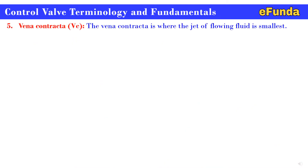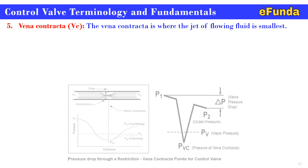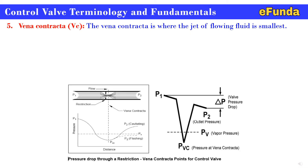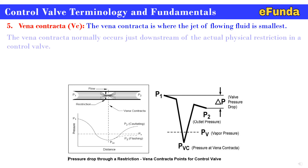Fifth: vena contracta (VC). Referring to the figure, a restriction is shown against flow at inlet pressure P1, and the differential pressure at the outlet through the restriction is P2. The vena contracta is where the jet of flowing fluid is smallest — the location where the cross-sectional area of the flow stream is at its minimum, fluid velocity is at its highest, and fluid pressure is at its lowest. The vena contracta normally occurs just downstream of the actual physical restriction in the control valve.